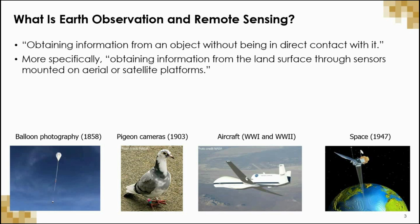Here we have some examples of remote sensing and the historical trajectory of remote sensing, dating from balloon photography in the mid-1800s, to the use of pigeons with cameras attached to their chests used for aerial reconnaissance, and later aircraft with various camera configurations for reconnaissance and surveillance. And finally the evolution of space-based remote sensing in the mid-1900s.